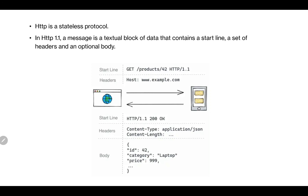As shown in this figure, in HTTP 1.1 a message is a textual block of data that contains a start line, a set of headers, and an optional body. As you can see, the start line begins with a description of what kind of method has been used to access that specific URL.